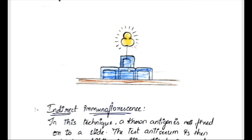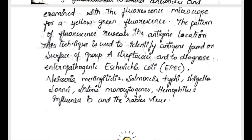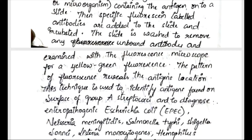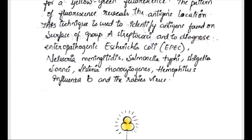The slide is then washed to remove unbound antibodies and examined under a fluorescent microscope for yellow-green fluorescence. This pattern of yellow-green fluorescence reveals the antigen location. This technique is mainly used to identify antigens found on the surface of group A streptococci and to diagnose enteropathogenic bacteria like E. coli, Neisseria meningitidis, Salmonella typhi, Shigella, Listeria monocytogenes, Haemophilus influenzae, and rabies virus.